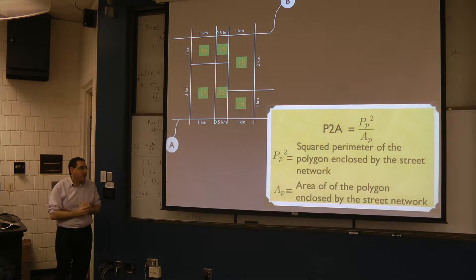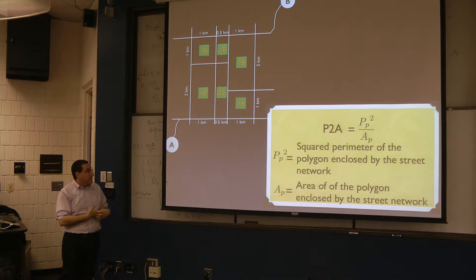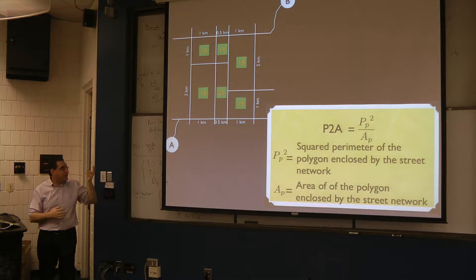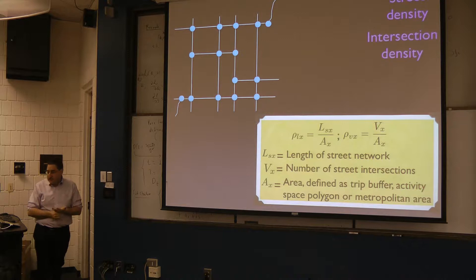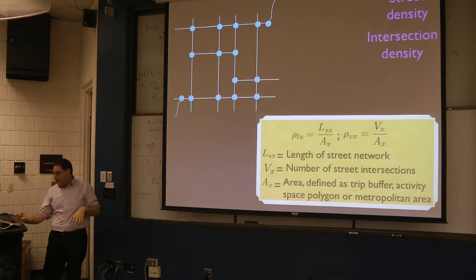The P-to-A ratio is the square of the perimeter enclosed by a polygon versus the area of that polygon — a shape factor indicating how elongated or square blocks are. People may think differently about networks that are long and elongated versus square or round. Street density is the length of the street network in an area divided by that area. Intersection density is the number of intersections divided by that area.